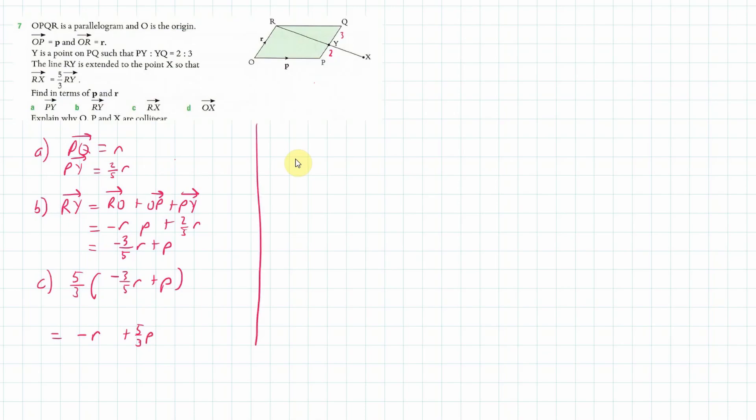D. And D. OX. Well, to get to OX, we're going to go, I've just found RX, haven't I? So I could go O to R plus R to X. I know that OR is R, and I know that RX is minus R plus five over three P, because I found that in the last question, and this gives me five thirds P.